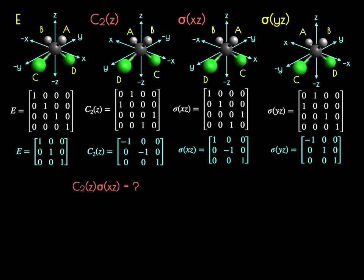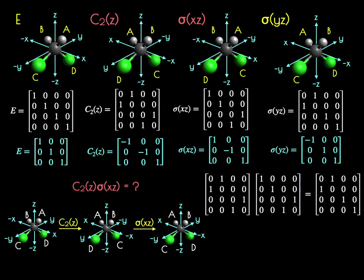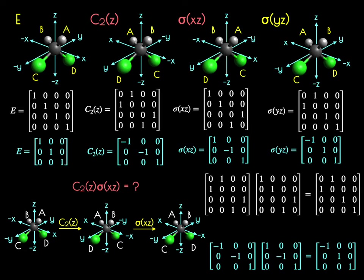Doing this visually: starting with the molecule and performing the C2Z rotation, A and B switch places and C and D switch places. Then applying sigma XZ — the mirror plane in the XZ plane — swaps the Y positions. The result is equivalent to a sigma YZ operation. The dot product of the 4×4 C2Z and sigma XZ matrices gives the 4×4 sigma YZ matrix, and the 3×3 matrices yield the same conclusion. Regardless of method, the answer is sigma YZ.